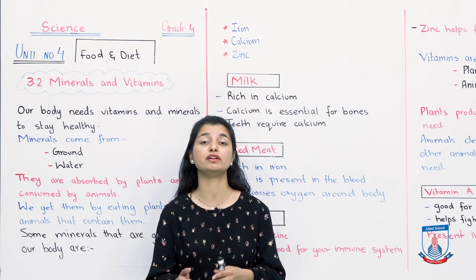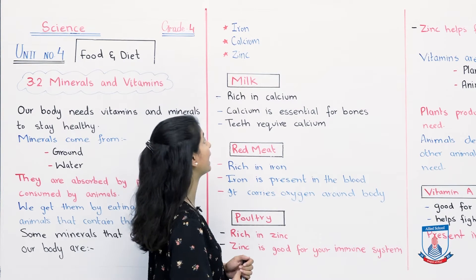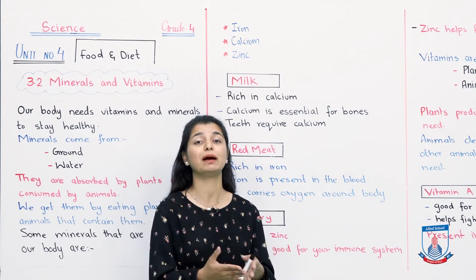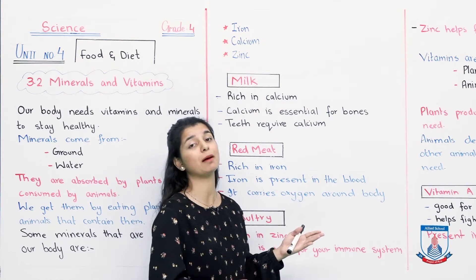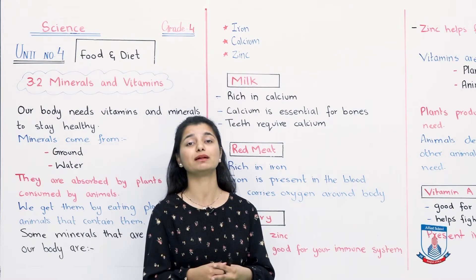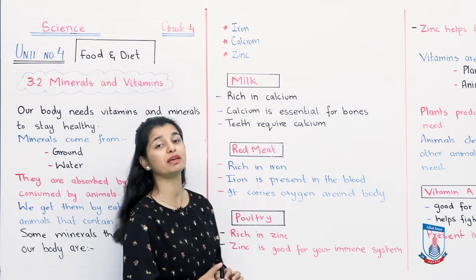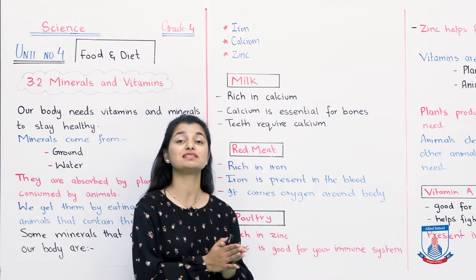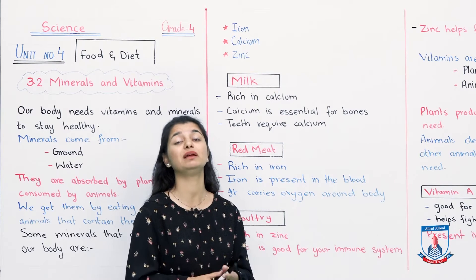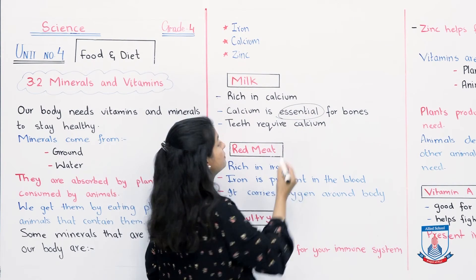Here we have a list of different minerals that are important for our body: first, iron; second, calcium; third, zinc. These are just some examples of the minerals that our body needs. We will go through different minerals and look at which food items contain them. First, we will talk about milk. Milk is a very good source of calcium.